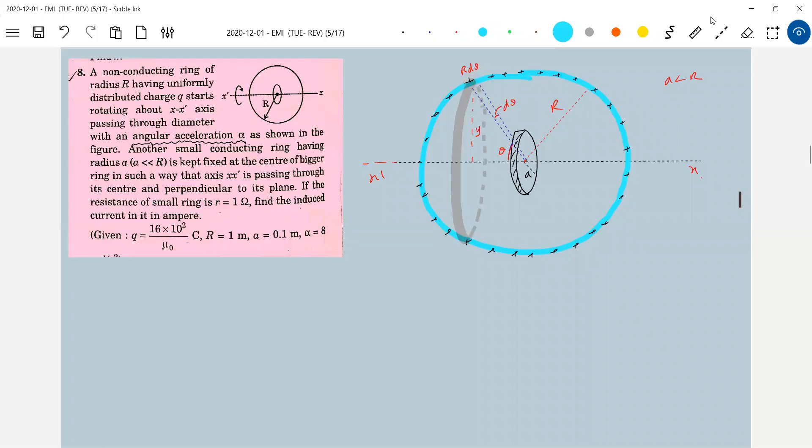First we'll calculate field due to this circular strip at this point O, then we'll integrate to get the total field due to this rotating non-conducting charge ring.